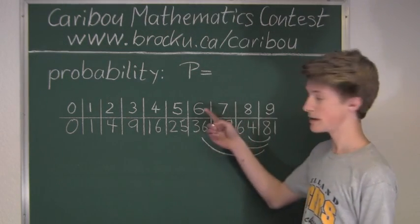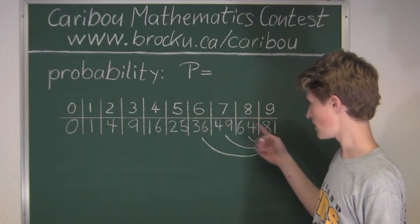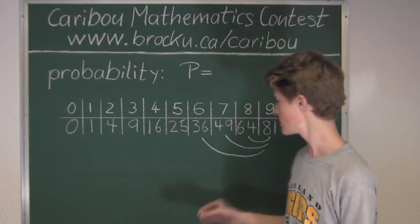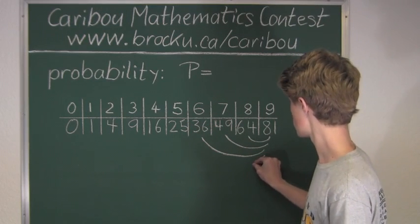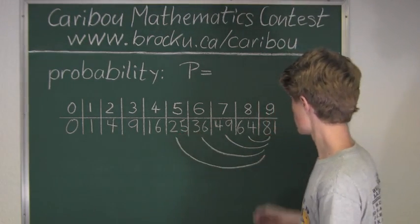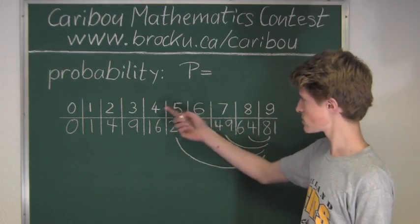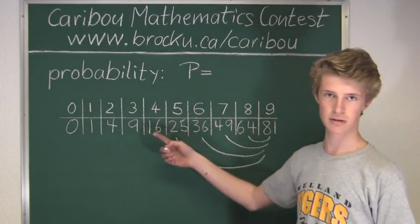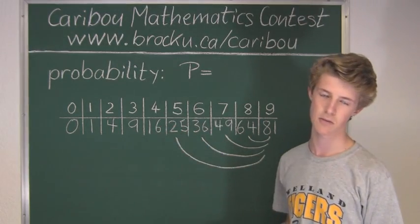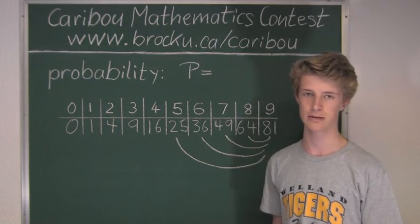Now we will take 9 and the next biggest number after 6, which is 5. 81 plus 25 is again more than 100, so that is another event that we want to count. Now we will take 9 and the next biggest number after 5, which is 4. So 81 plus 16 is only 97, and that is not more than 100, so that is not an event that we want to count.